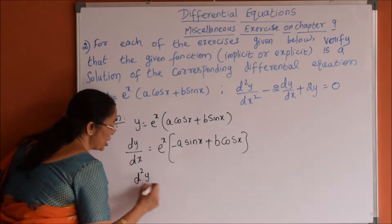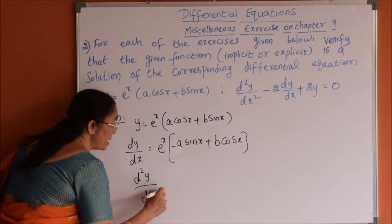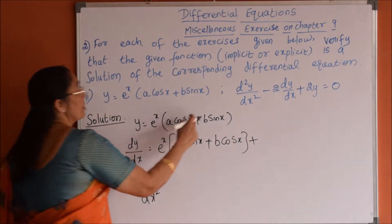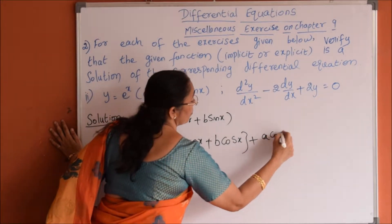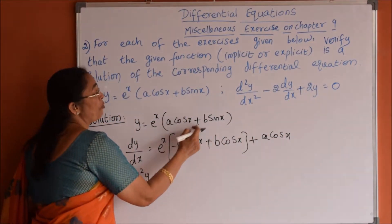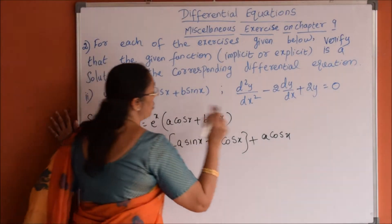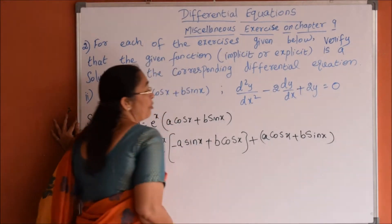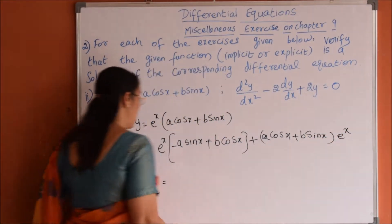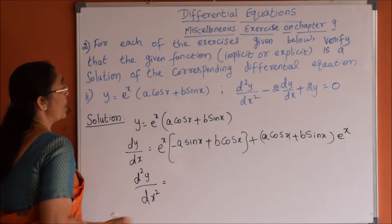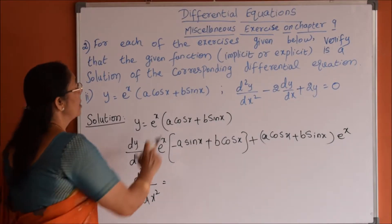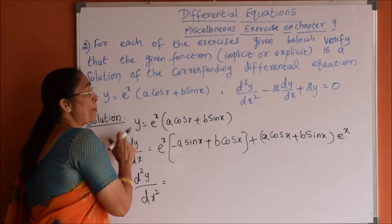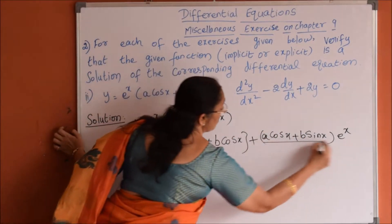Now for second differentiation d square y by dx square, we apply the product rule. We also need v into differentiation of u: a cos x plus b sin x into differentiation of e power x is e power x. Before proceeding, we can replace a cos x plus b sin x into e power x as y, since this is nothing but y.